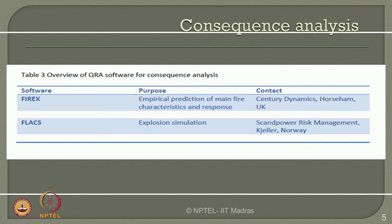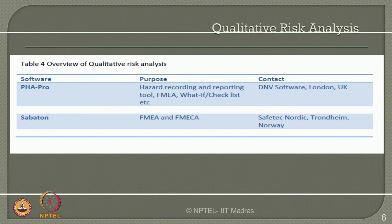The third segment of software is focused on consequence analysis, where PHYREX and FLACS are common software models used. PHYREX talks about empirical prediction of main fire characteristics, developed by Century Dynamics UK, whereas FLACS software is for explosion simulation, developed by Scan Power risk management Norway. The fourth segment covers qualitative risk analysis tools, where PHA Pro developed by DNV Software UK is a hazard recording and reporting tool covering FMEA, what-if and checklists, widely used in oil and gas industries. SAFETION is a parallel software used for FMEA and FMECA, developed by Safe Tech Nordic Norway.